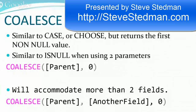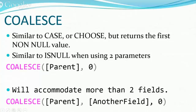On to COALESCE. COALESCE is kind of similar to CASE or CHOOSE in some cases. What it does is it says, give me the first non-null item in the list. So it's kind of like isNull with two parameters. We're saying COALESCE of parent — which is the name of a column in this example — comma, zero. isNull would return the same thing: if parent is null, it would set it to zero. Otherwise, it would return parent.